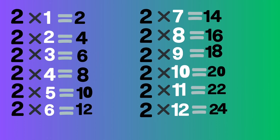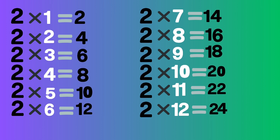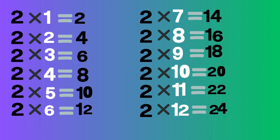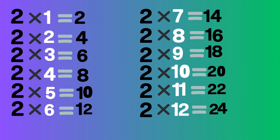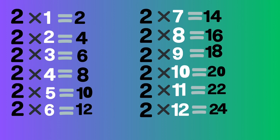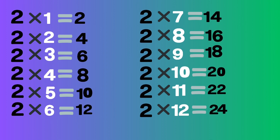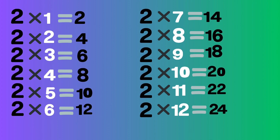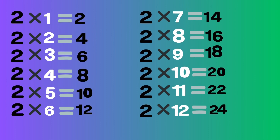Two ones are two, two twos are four, two threes are six, two fours are eight, two fives are ten, two sixes are twelve, two sevens are fourteen, two eights are sixteen.